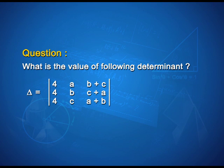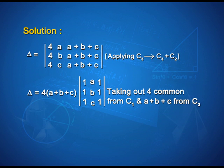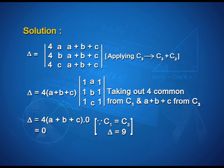What is the value of the following determinant? |4, a, b+c; 4, b, c+a; 4, c, a+b|. By applying C3 → C2 + C3, the determinant becomes |4, a, a+b+c; 4, b, a+b+c; 4, c, a+b+c|. We take out 4 from column 1 and (a+b+c) from column 3 as common factors, giving 4(a+b+c) × |1, a, 1; 1, b, 1; 1, c, 1| = 4(a+b+c) × 0 = 0, since columns 1 and 3 become identical.